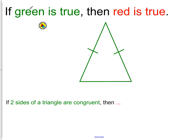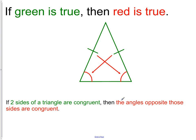So here we have a few definitions. If the two sides of a triangle are congruent, then the two angles opposite those sides are congruent.